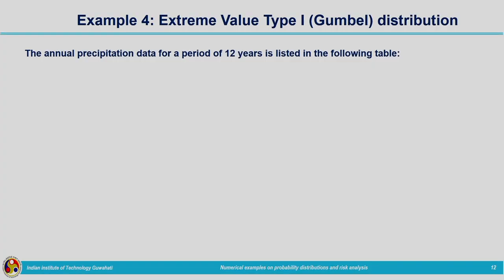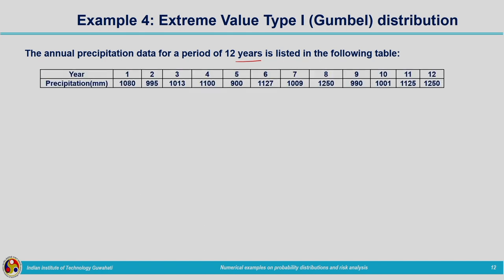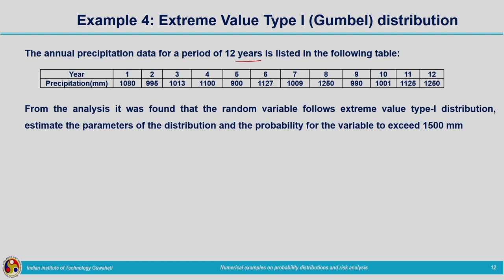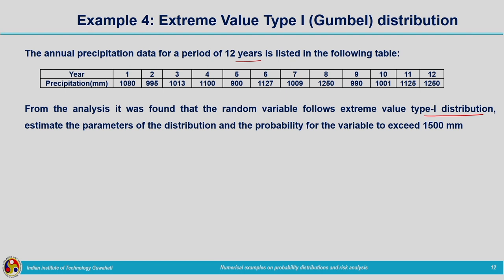The annual precipitation data for 12 years (same data as in the first problem) is given. It has been established that the random variable follows Extreme Value Type 1 (Gumbel's) distribution. We need to estimate the parameters of the distribution and the probability for the variable to exceed 1500 mm.